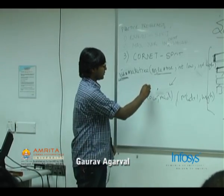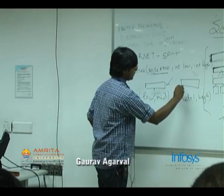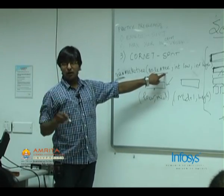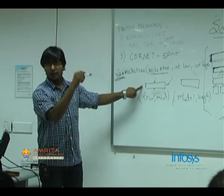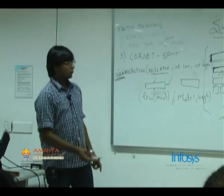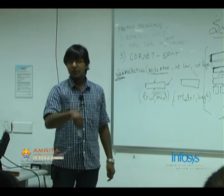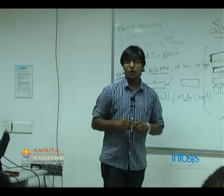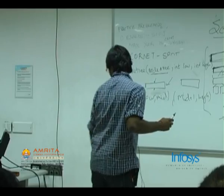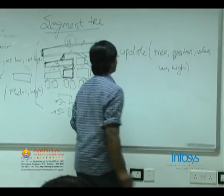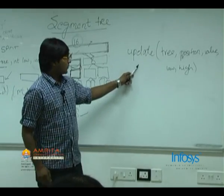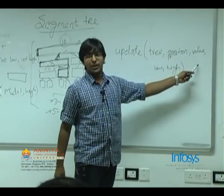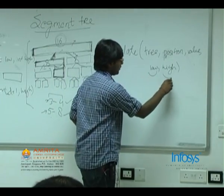For an update operation, the signature includes the position to update, the new value, and the same low-high range. What I want to emphasize is that the tree structure and its division are built on the array size — not on any value or position. So you always pass 1 to n as the range. The division structure remains fixed; you have access only to those intervals.